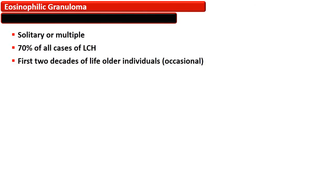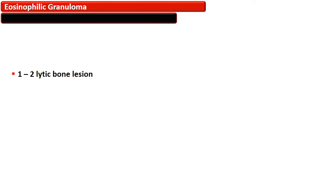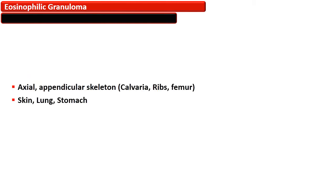Eosinophilic granuloma can be solitary or multiple and accounts for more than 70% of cases of Langerhans cell histiocytosis. It affects people in the first two decades of life. Morphologically, one or two bony lytic lesions are present affecting the axial or appendicular skeleton. Calvaria, ribs, and femur are the most commonly affected sites.